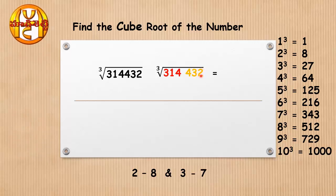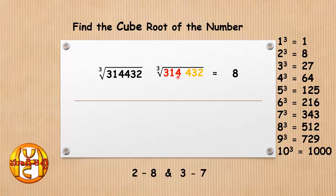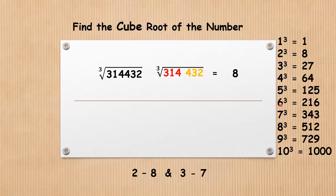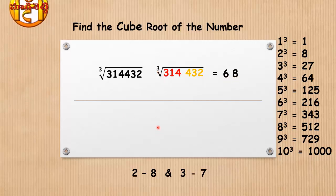In the first group, the units place digit is 2. If we have 2, the answer of the first digit is its conjugate pair, which is 8. After that, take the second group 314. Clearly 314 lies between 216 and 343, the cube values of 6 and 7. The least value is 6 cube, so we take digit 6. The cube root of this number is 68.